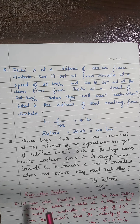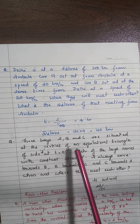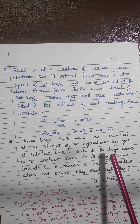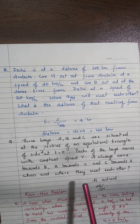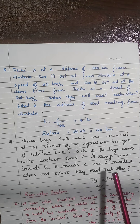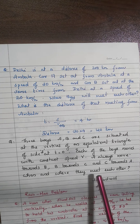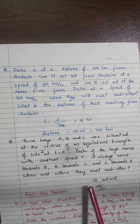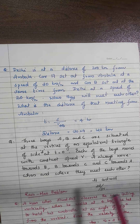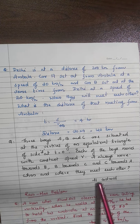A classic NEET and IIT-JEE problem: three boys A, B, and C are situated at the vertices of an equilateral triangle of side d at t = 0. Each moves with constant speed v — A always toward B, B toward C, and C toward A. Where and when do they meet? They meet at the centroid of the triangle. The displacement from a corner to the centre is d/√3, and you can find the meeting time from that.